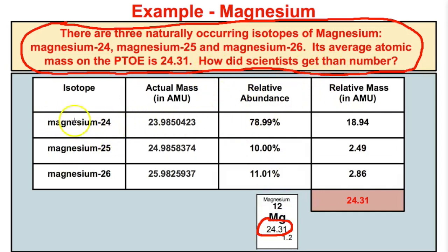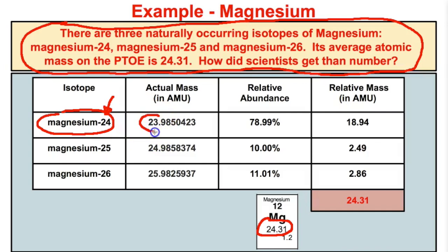Here we go. If we take a look at the magnesium-24 isotope, we know that its actual mass is close to 24 — it's 23.9850423. This is close to 24 because we're assuming that electrons have zero mass or zero AMUs, when in fact they don't. They actually have a very tiny mass. That is why we see 23.9850423 instead of 24. So if we take this number — the actual mass of magnesium-24 — and multiply it by its relative abundance in the universe, we will end up with the relative mass in AMUs of this isotope of magnesium.